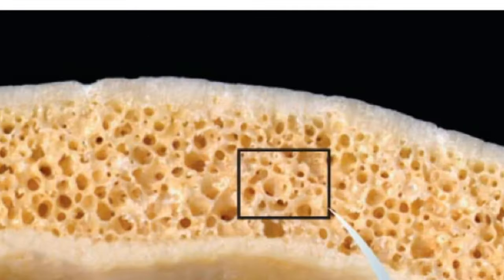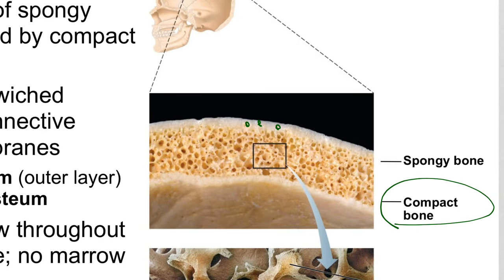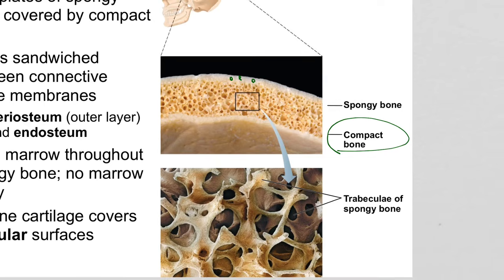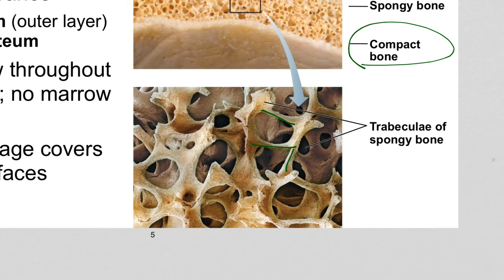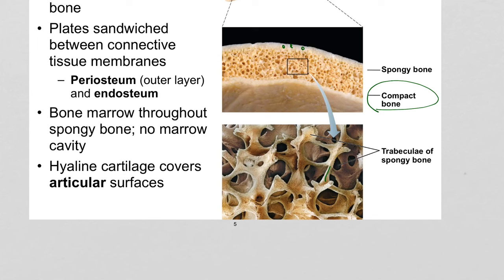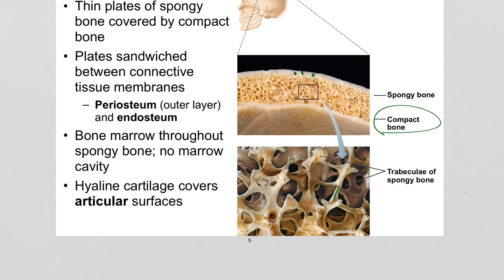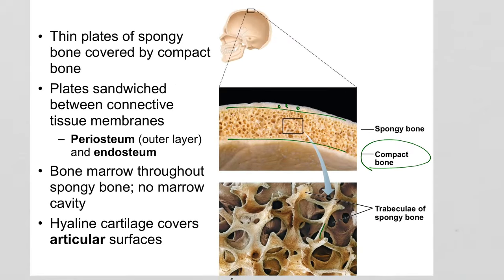Spongy bone is organized very differently. These strips of bone held together in a spiderweb latticework structure are called trabeculae. The purpose is to build a three-dimensional structure with a lot of space in the middle, mostly to reduce weight. The compromise is to put two solid compact bone plates on the exterior and spongy bone in the interior — that way you get thickness but not enormous weight.